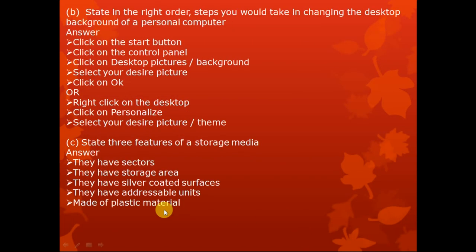The steps to change the desktop background of a personal computer: Method 1 — click the start button, click control panel, click on desktop pictures or background, select your desired picture, then click OK. Method 2 — right-click on the desktop, click personalize, select your desired picture or theme. Method 1 is for Windows 7 and Windows XP; Method 2 is for Windows 8, Windows 10, and Windows 10 Pro.